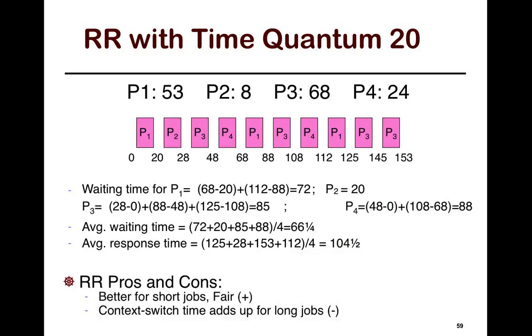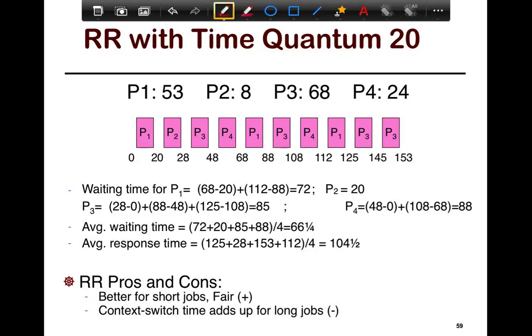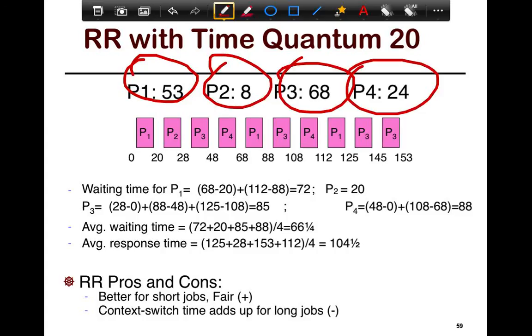So, if you look at the simulation of this, let's look at an example. So, here we have four tasks, P1, P2, P3, and P4. So, here we have P1 and P3, really long tasks, 53 and 68 time units, P4 is 24, and P2 is 8, right? So, very varied requirements.